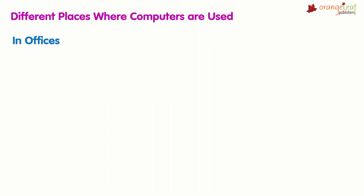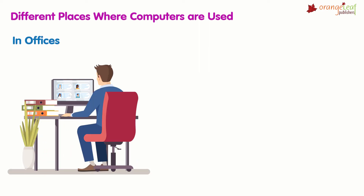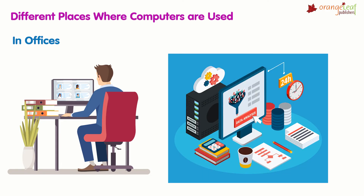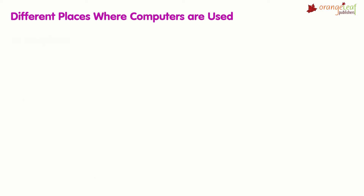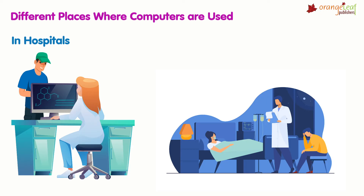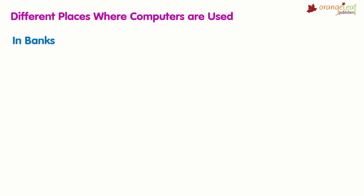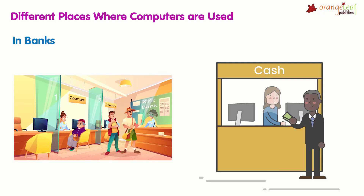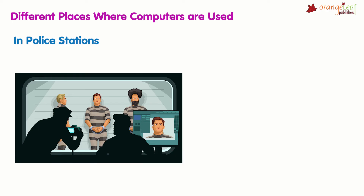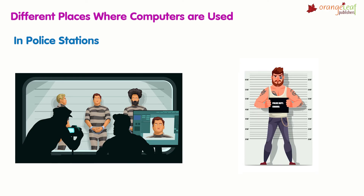In offices, computers are used to do office work, keep track of employees' records, and update office data. In hospitals, computers are used to store information about patients. In banks, computers are used to deposit and withdraw money. In police stations, computers are utilized to keep track of criminals and identify them.